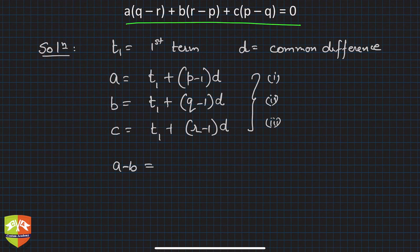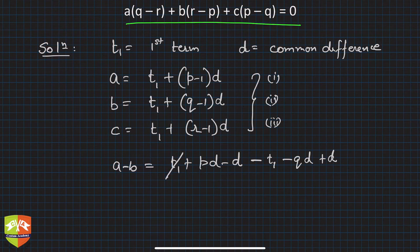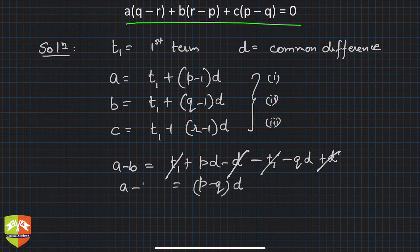I will write it out so that it becomes easier for others as well. So minus t₁, minus qd, plus d, right? So t₁ disappears, d disappears. So it is nothing but d common: p minus q. So (p-q)d = a-b.